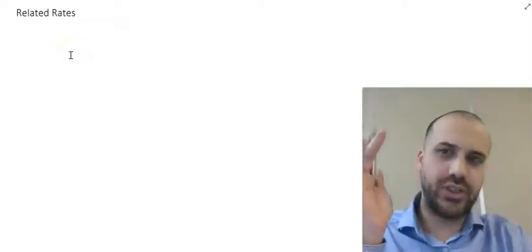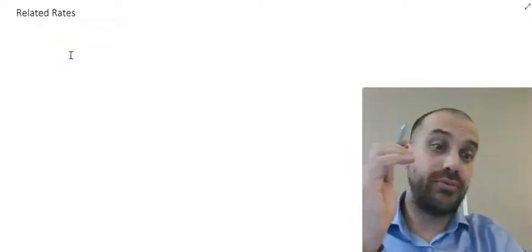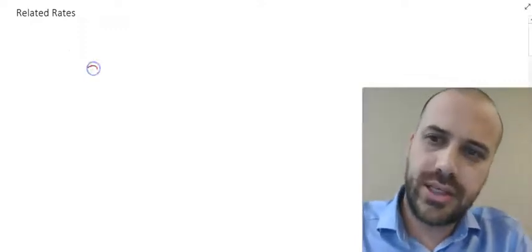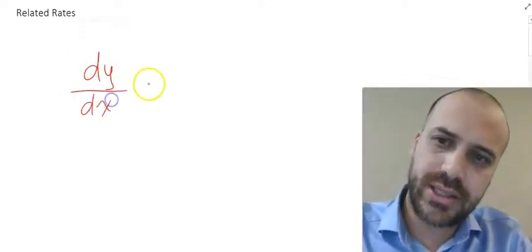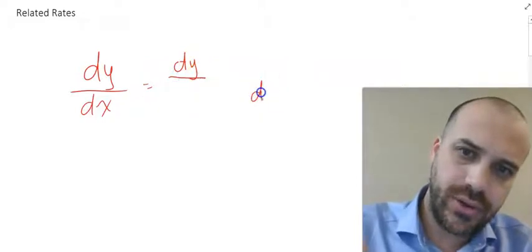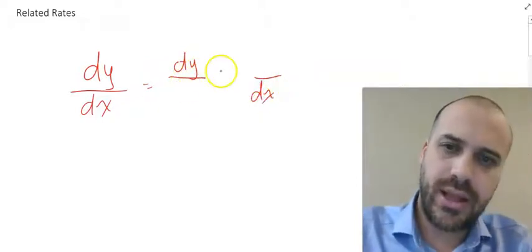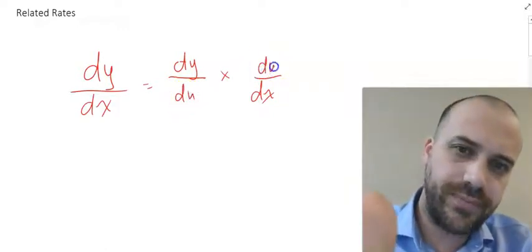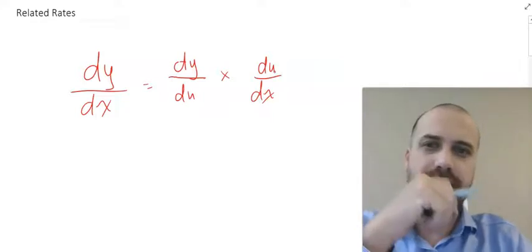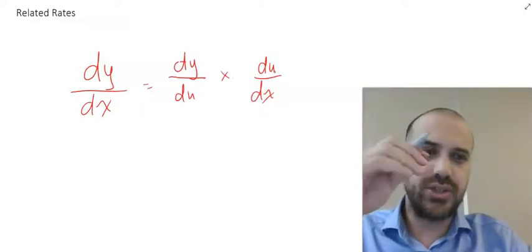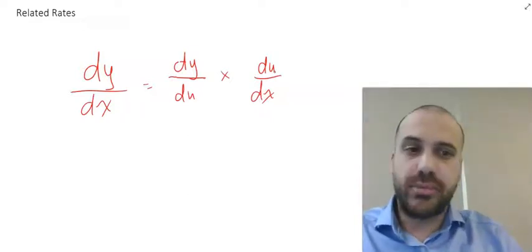Related rates is a really fun idea and a great application of the chain rule. The first thing to know about related rates is to look at the chain rule and write it out like this: the derivative of y with respect to x is equal to the derivative of y over the derivative of x times du. Writing it out that way is going to be really handy for related rates questions. Now let's dive in and do a bunch of them — learn by doing.